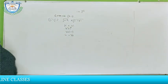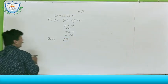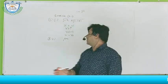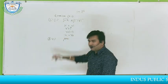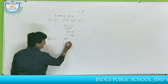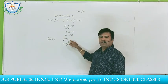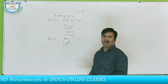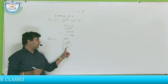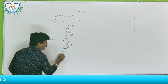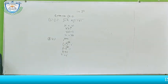Next question: second question, first part — find the value of iota to the power 243. We resolve iota to the power 243 using iota squared. Dividing 243 by 2 gives quotient 121 remainder 1, so we write iota squared to the power 121 times iota. Iota squared equals minus 1, so this becomes minus 1 to the power 121 times iota. Since 121 is an odd number, minus 1 to the power 121 is minus 1. Therefore the answer is minus iota.